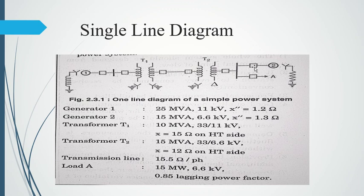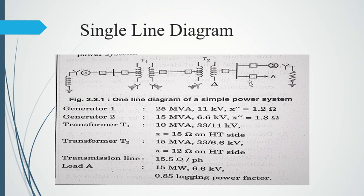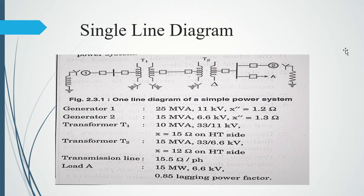T2's primary side is connected with a grounded star connection and its secondary side has a delta connection. From the delta secondary, the line goes to another circuit breaker, then to a feeder — a vertical bus — that distributes power to two loads. One path connects via circuit breaker to a second transformer (15 MVA, 6.6 kV, reactance 1.3 ohms, with grounded star and resistive element), and the other connects to Load A: 15 MW, 6.6 kV, 0.885 lagging power factor.